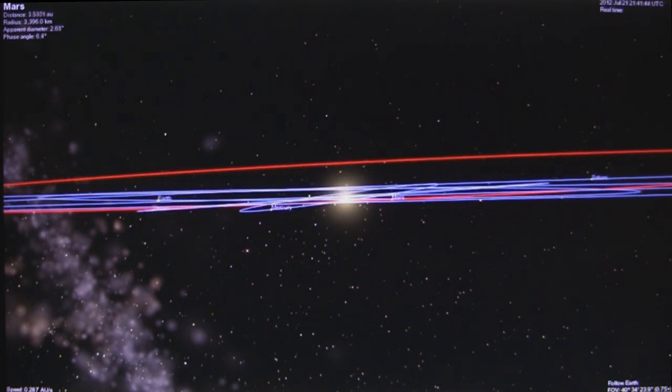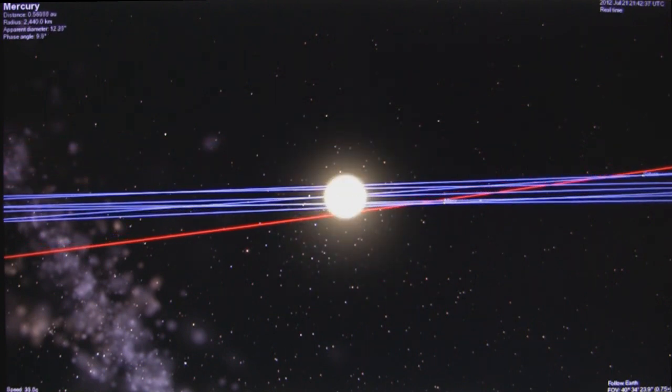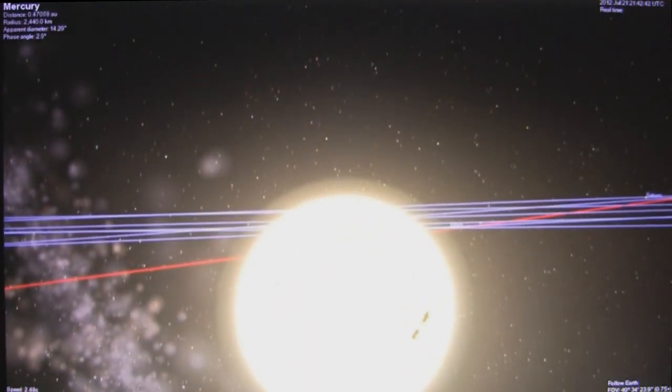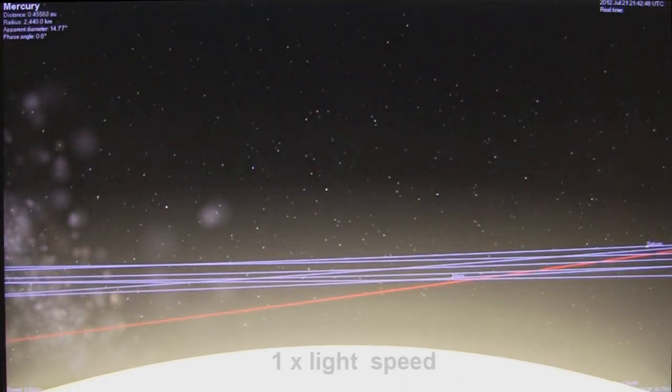First Mars, then Earth, then Venus, and finally Mercury. At which point we've got to put on the brakes so we can do a comparative light speed flyby of the sun. Ooh, that's one hot meatball.